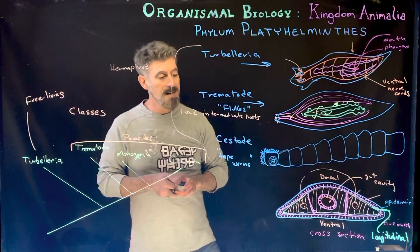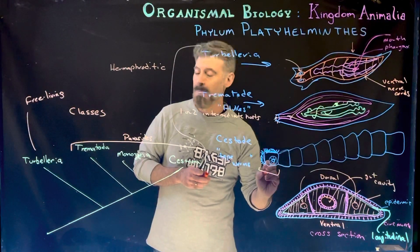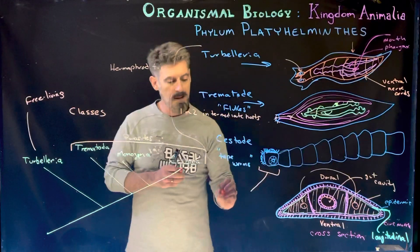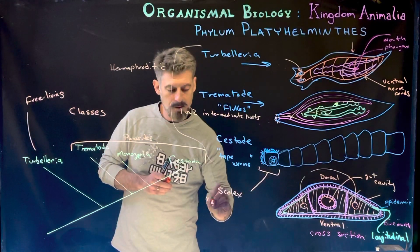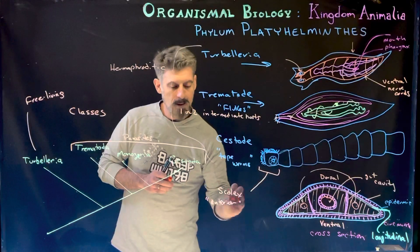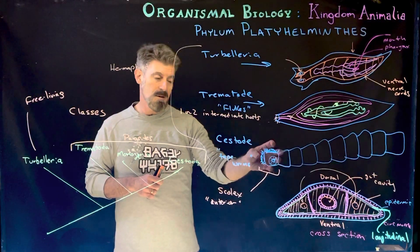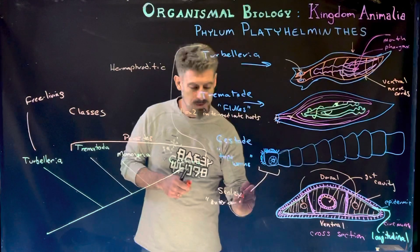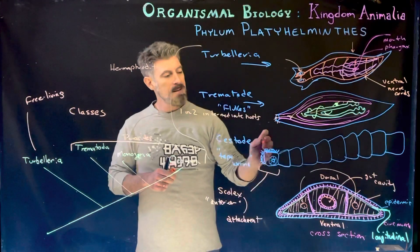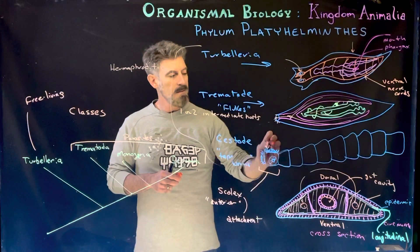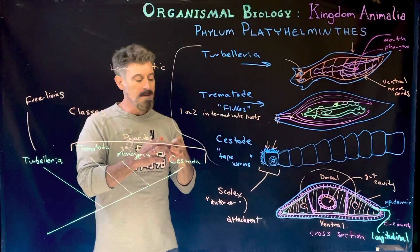Cestodes — the tapeworms — have a couple of unique things to point out. The anterior region is often called a head, but don't think of it that way — it's called a scolex. It is really just an attachment structure, with hooks and suction cup-like suckers that allow it to grab onto the inside of the intestine of its host. Cestodes are typically parasites of vertebrate digestive systems.